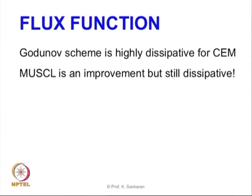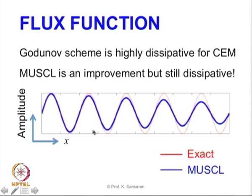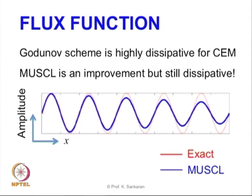What I mean by dissipation is: if you have a wave going in the x direction, the exact value in red shows the amplitude of the wave should not change. But when using numerical methods, because the flux function computed is not accurate, it leads to a slow decay in amplitude — this is called numerical dissipation. We now need to discuss ways to improve this for electromagnetic problems.